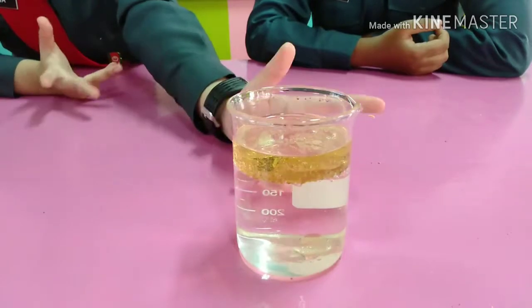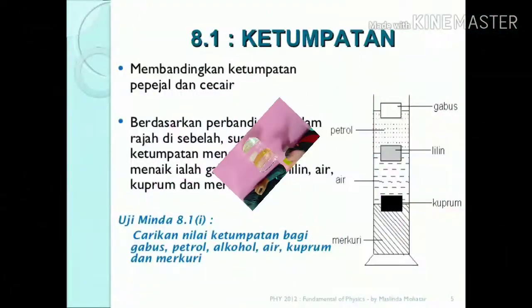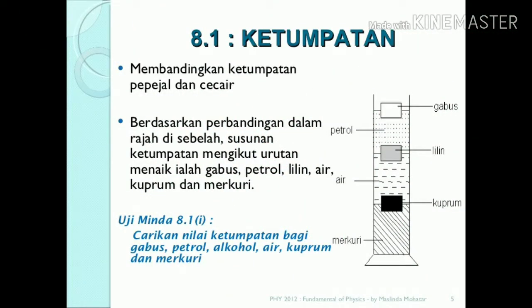Mengapakah ini berlaku? Minyak terapung kerana ketupatannya lebih rendah berbanding ketupatan air. Ketupatan minyak adalah kurang daripada 1 gram per sentimeter padu. Berdasarkan perbandingan dalam rajah, susunan ketupatan mengikut urutan menaik ialah gabus, petrol, lilin, air, kuprum, dan merkuri.